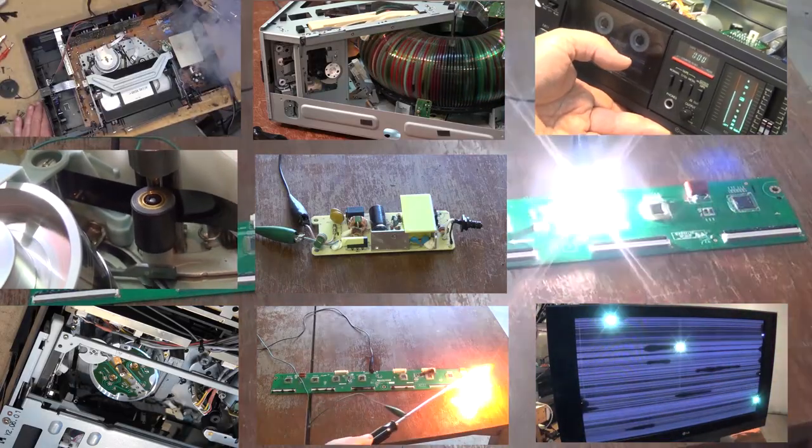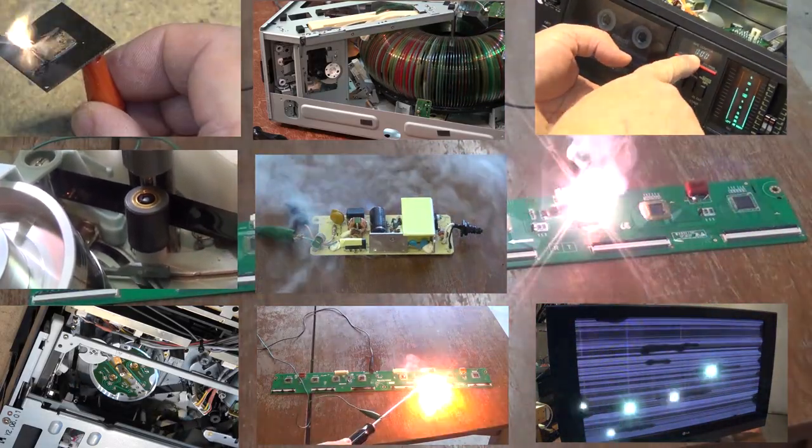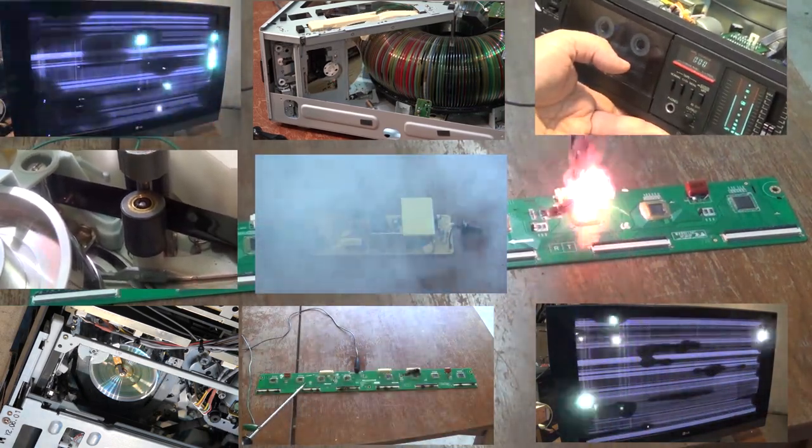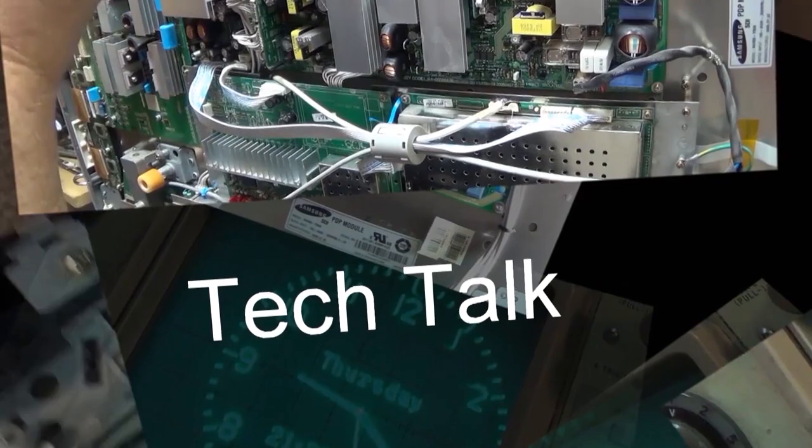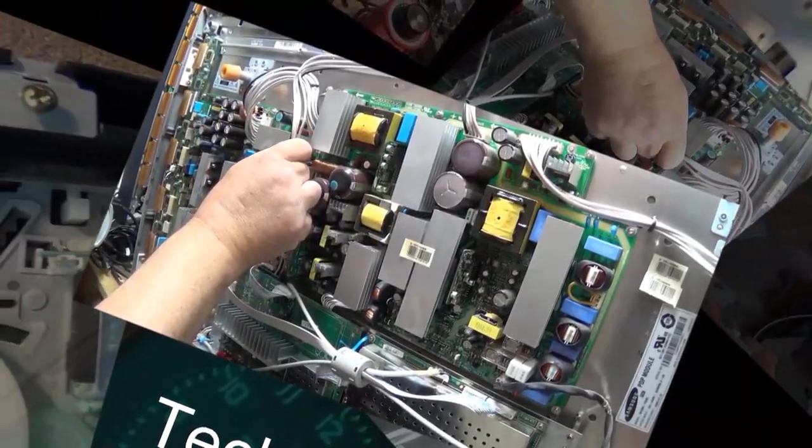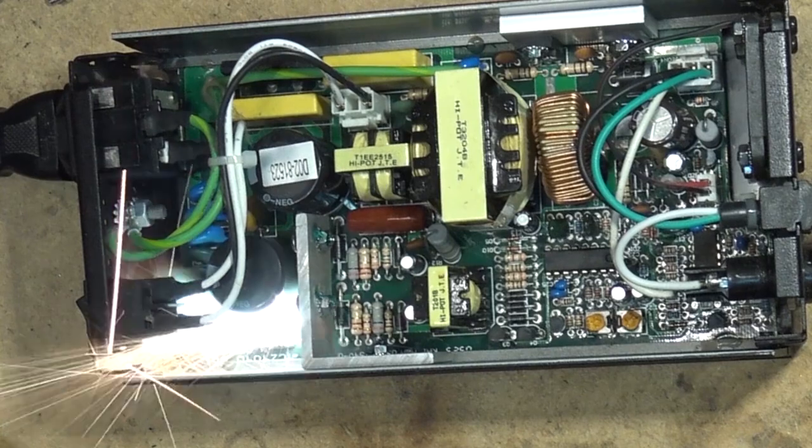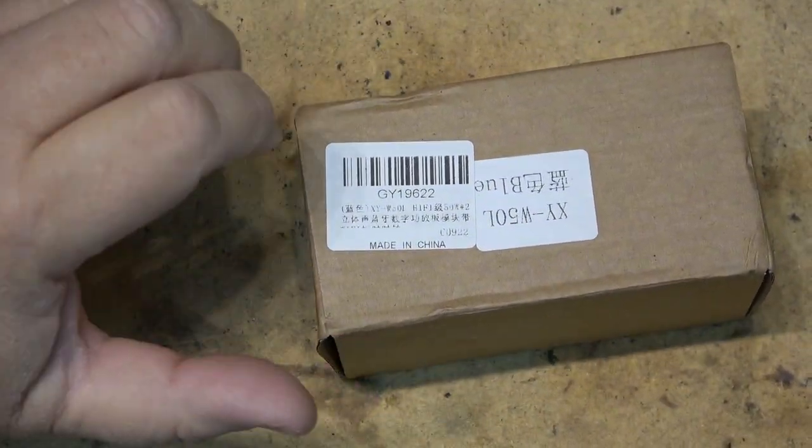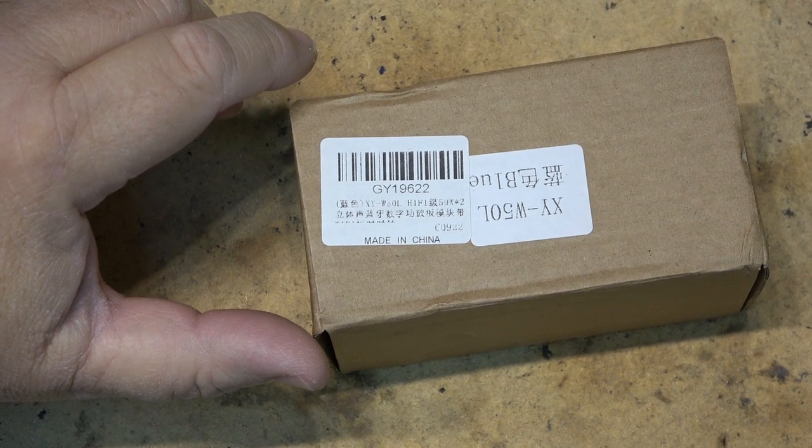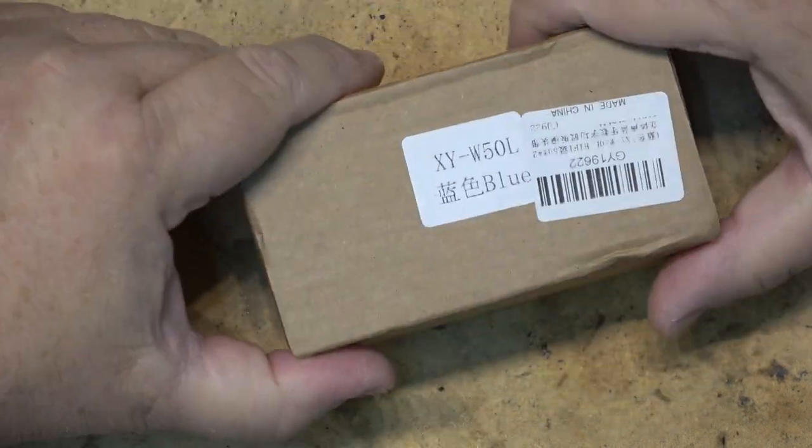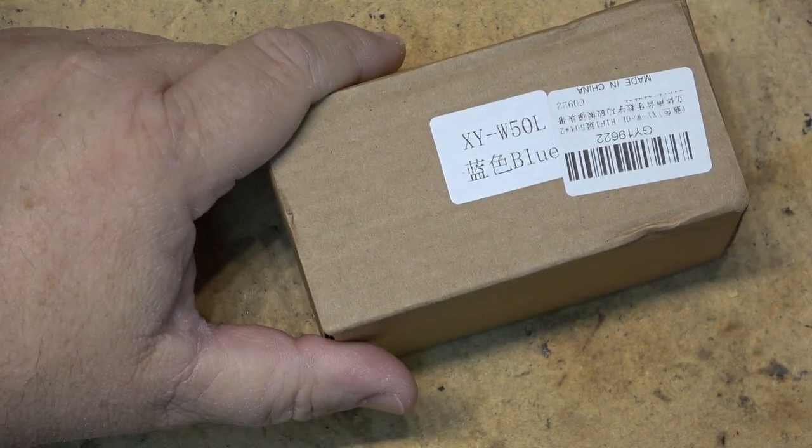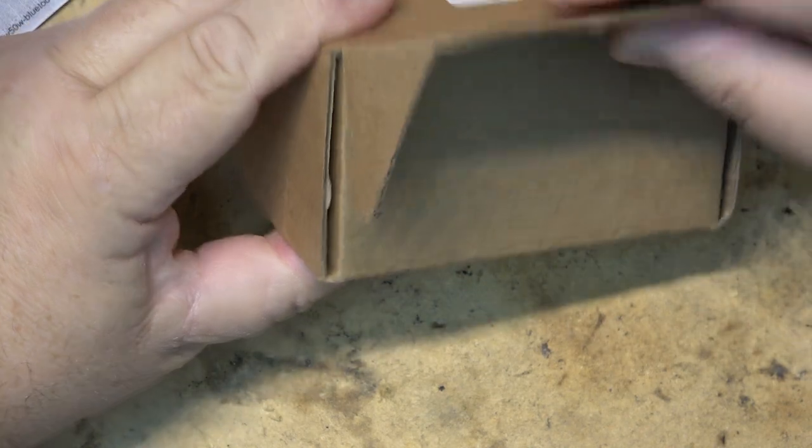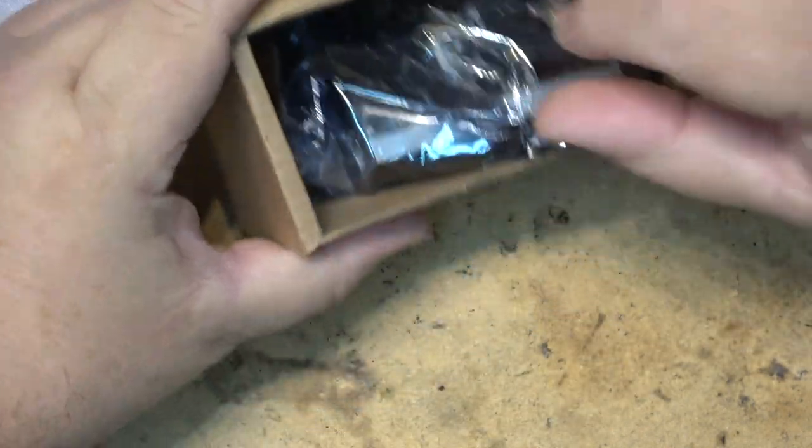This time I got another module from ICStation. This one's a digital clock with an MP3 plus Bluetooth 50-watt amplifier attached, and what's unique about this is it sets itself through your WiFi connection. Let's check this one out.